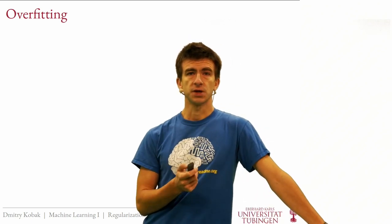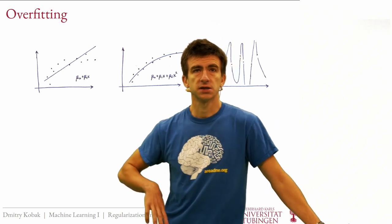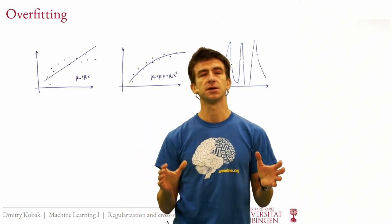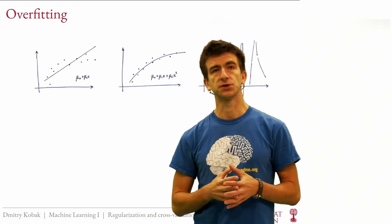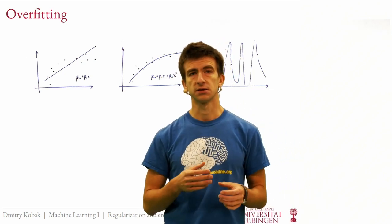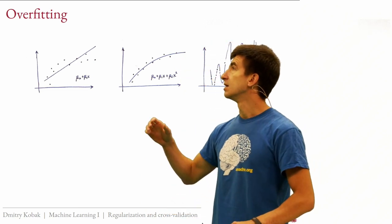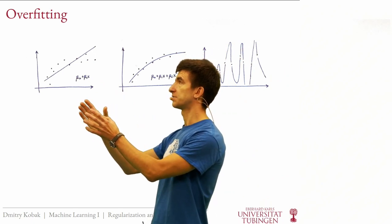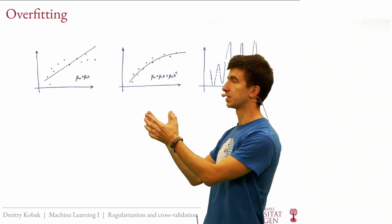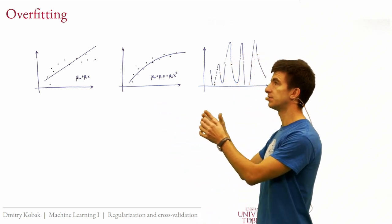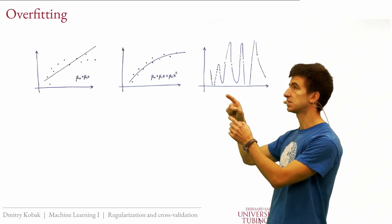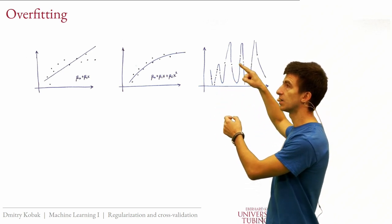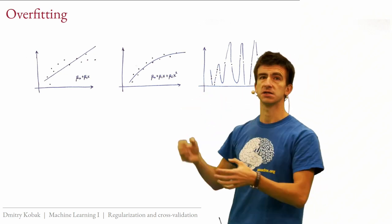Last time we introduced the concept of overfitting, and to illustrate it I used the example of polynomial regression. In my example from last week, we were fitting polynomials of different degrees to a small dataset with maybe 10 points. Increasing the degree: a straight line doesn't fit well, a quadratic fits really well, but a ninth-degree polynomial has a function space so rich that it can go through every single point in the data.